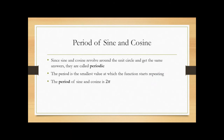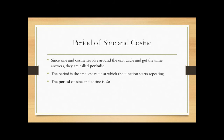Periodicity means you're getting a pattern of answers that keeps repeating. The value you can add where you get the same answer you started with is called the period. For sine and cosine, the period is 2π — you add 2π and you get back to where you began.